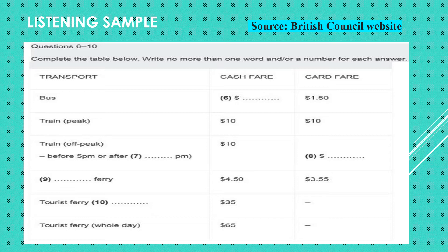Read the instructions carefully, paying particular attention to how many words you are allowed to write for the answer. Usually, these types of questions require you to write in facts and figures such as times and dates. You will often hear more than one piece of information that could fit the gap, so do not just write in the first time or date that you hear. Sometimes the speaker will correct their own answer, meaning that the first response they gave was incorrect.